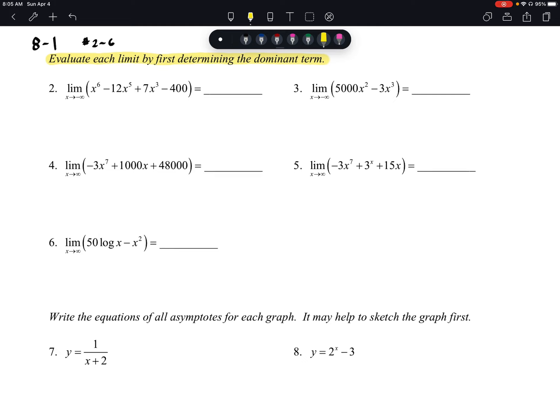So our dominant term here is going to be x to the 6th, and since x to the 6th has a positive coefficient, we know the shape of this graph is going to look something like this. Our end behaviors are going to be the same, and since it's a positive term, it's going to have a positive orientation.